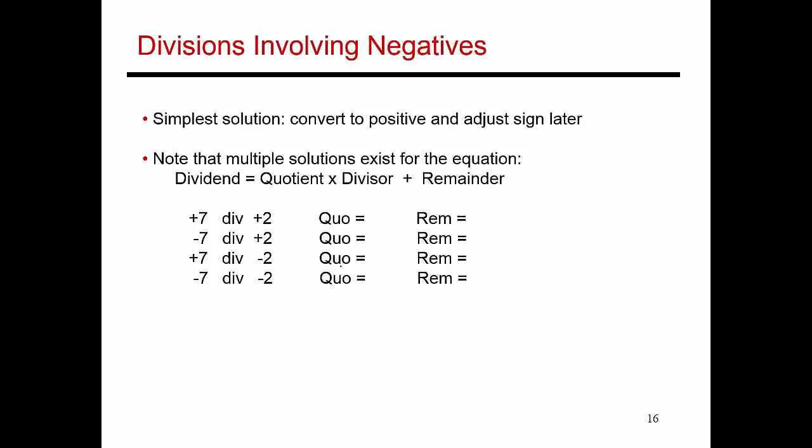Now, what we've seen before was division involving two positive numbers. But what if one of the numbers was negative? So the simplest solution is to convert that negative number to a positive number and then figure out the sign later. And there are multiple possible solutions.